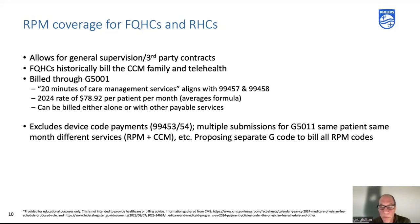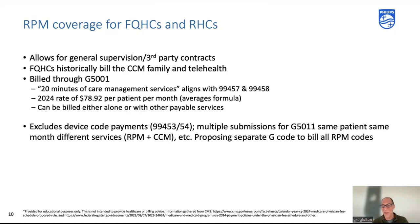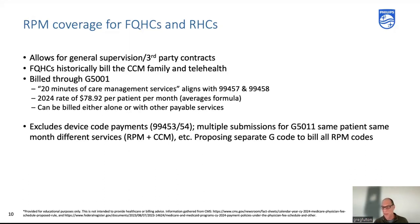For FQHCs, billing works a bit differently — billed through G5011 — once a month per patient, sort of as a bundle. You bill G5011 when you've spent time with chronic care management with your patient. G5011 has a single rate: $78.92. That's really a weighted average formula CMS put together by encompassing the RPM code family rates and reimbursements with those traditionally of CCM — a blended rate.